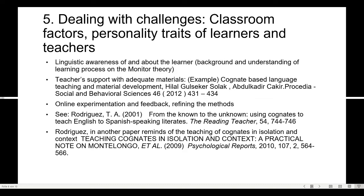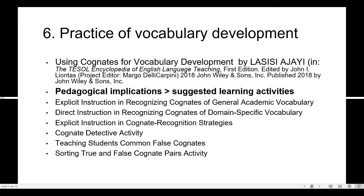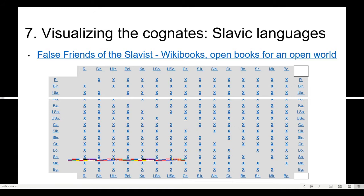An interesting example is on slide 7: how to visualize cognates in the students' minds. This is about the Slavic languages, but I like this visualization because the teacher could make such a visualization of the languages of the learners and the cognates already existing in the classroom — the good friends and the false friends.